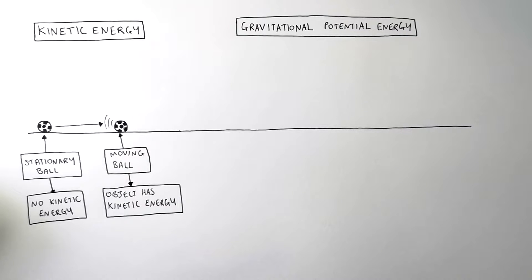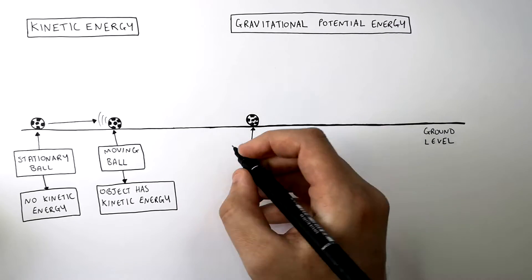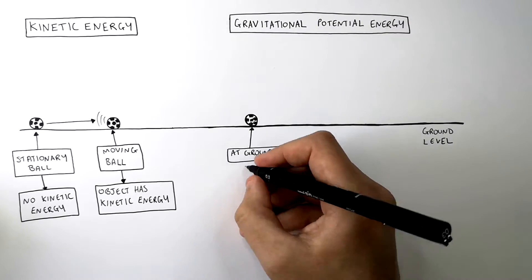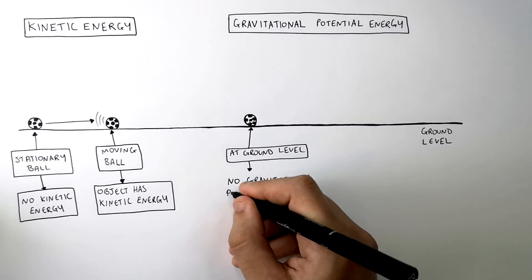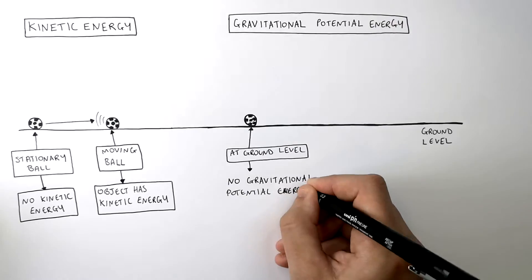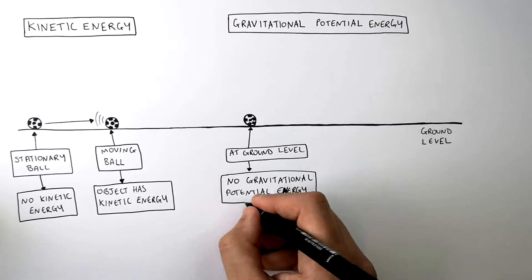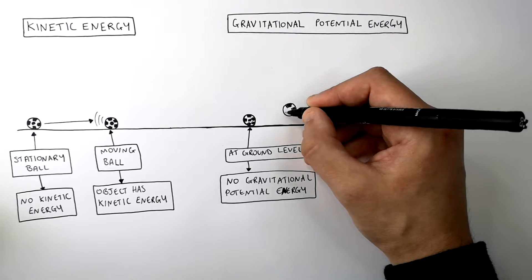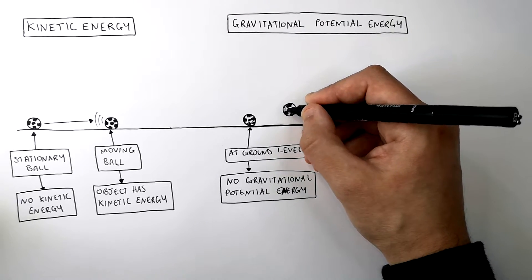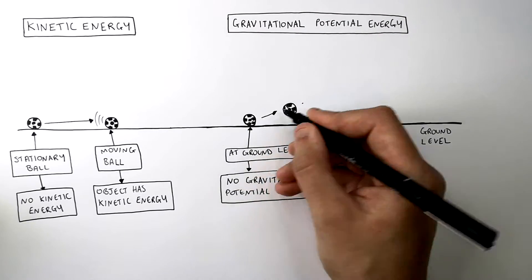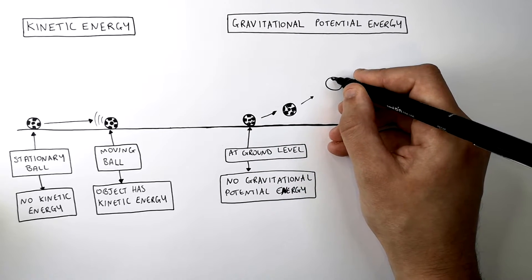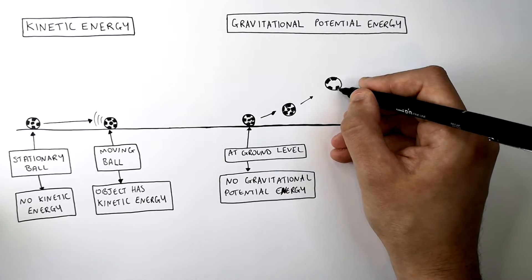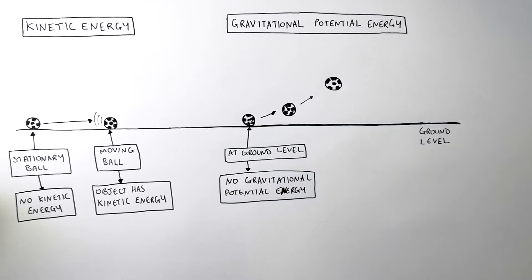So we've seen that kinetic energy is the energy store when an object is moving. But what is gravitational potential energy? This is a ball at ground level, which means it's got no energy in its gravitational potential energy store. Let's now say someone applies a force to the ball and it leaves the ground and goes into the air. The ball now has energy in its gravitational potential energy store, and because it's moving, it also has energy in its kinetic energy store.